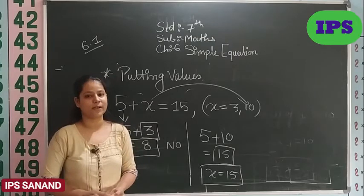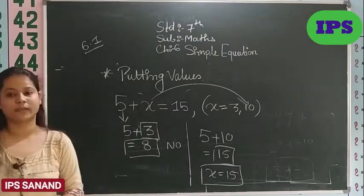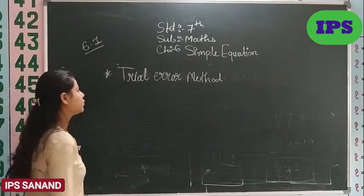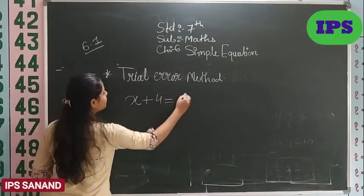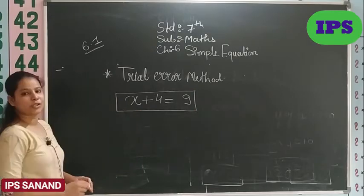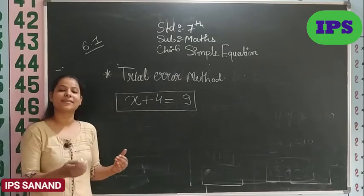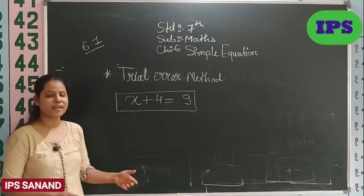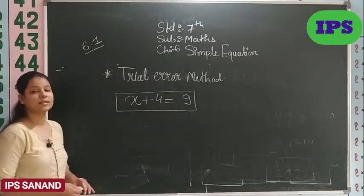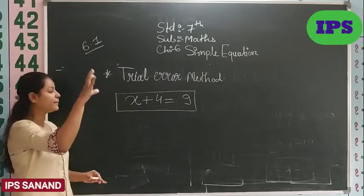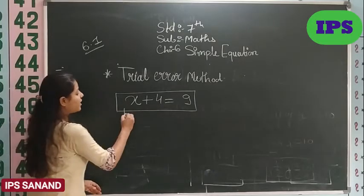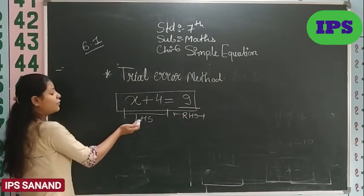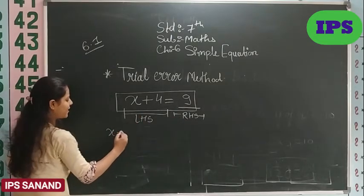This was putting values. But, what if we have to find the values? So, finding values has two methods. Our first method is trial and error method. So, how will we do this? x plus 4 equals to 9. This is my question. And, I am asked to find the value of x. Earlier, we were given x's values. But, now we have to find x's value ourselves. So, we have done trial and error method many times in fifth, sixth standard. In the same way, we have to do this also.